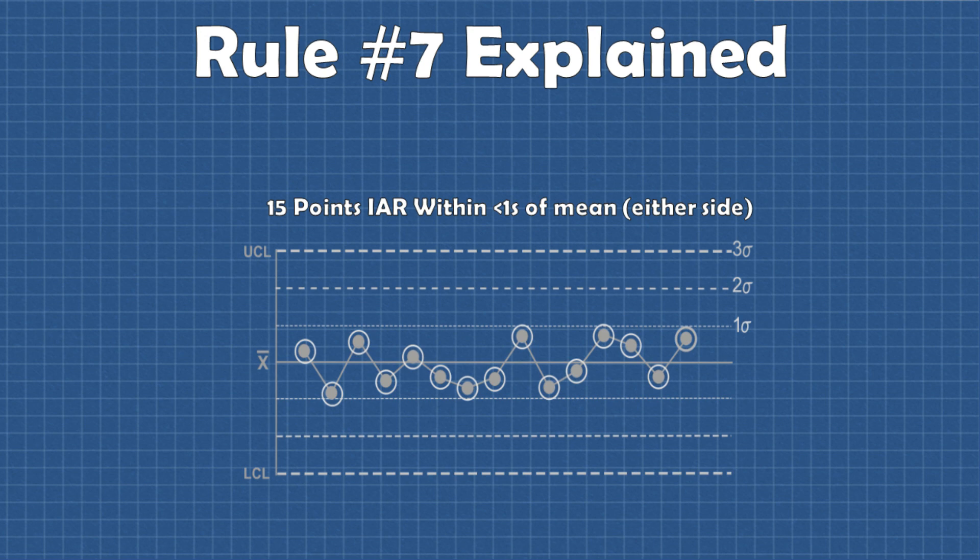Rule seven can detect two things. First it can detect issues with the subgrouping or sampling method. A pattern of 15 points in a row within one standard deviation of the mean can be mistaken as good control and really it's just a result of subgroups that have samples taken from multiple processes. That being said this will only occur in subgroup charts like X bar charts.